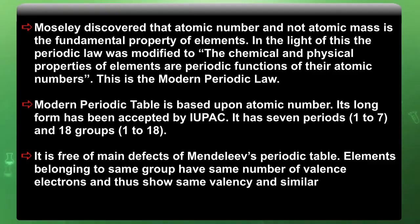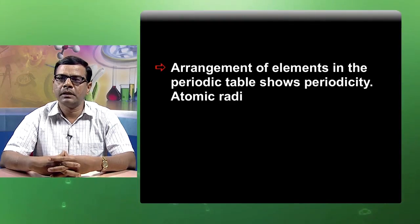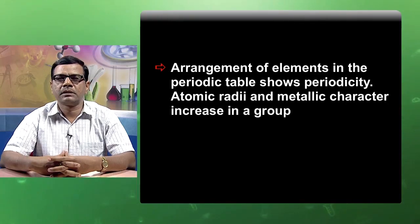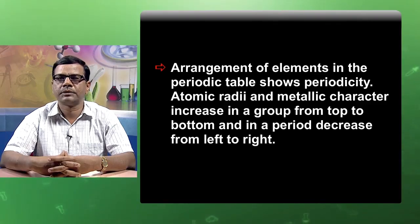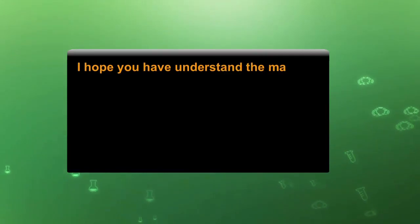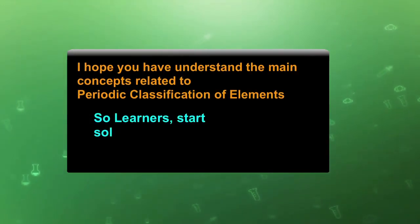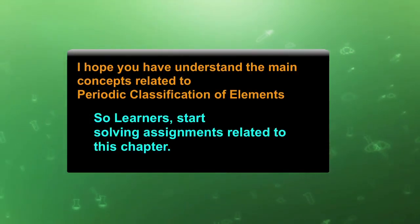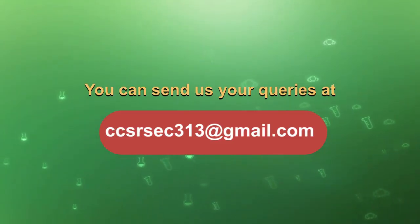Elements belonging to the same group have the same number of valence electrons, and thus show the same valency and similar chemical properties. The arrangement of elements in the periodic table shows periodicity — atomic radii and metallic character increase in a group from top to bottom, and decrease from left to right in a period. I hope you have understood the main concepts related to periodic classification of elements. Start solving your assignments related to this chapter. Good luck and best wishes.